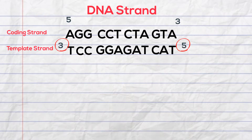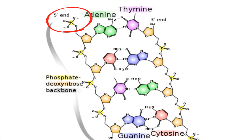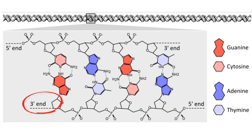What's this about 3 prime and 5 prime? In very simple terms, the phosphate group is attached to the 5 carbon of the sugar ring — this is why it's called the 5 prime end. The hydroxyl group is attached to the 3 carbon of the sugar ring, which is why it's called the 3 prime end.